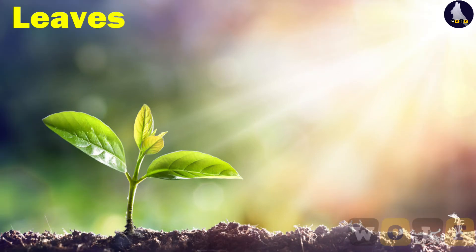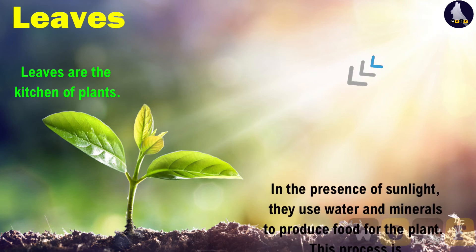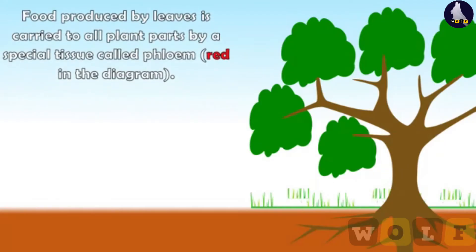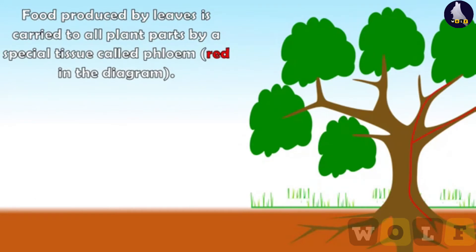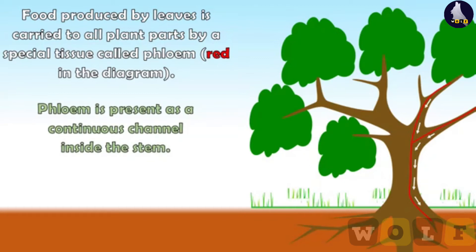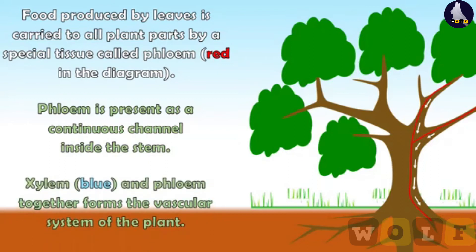Leaves are the kitchen of plants. In the presence of sunlight, they use water and minerals to produce food for the plant. This process is called photosynthesis. Food produced by leaves is carried to all plant parts by a special tissue called phloem. Phloem is present as a continuous channel inside the stem. Xylem and phloem together form the vascular system of the plant.